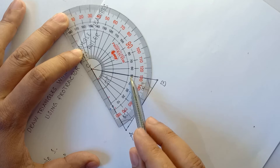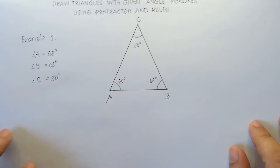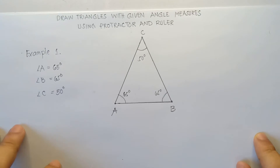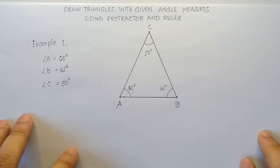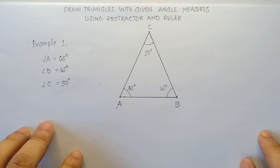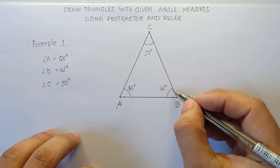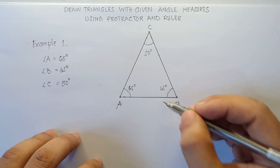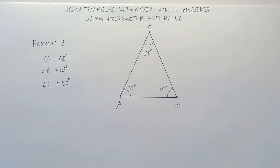All set! That's how you draw triangles with given angle measures. Easy, right? Do not forget to label 65, 65, and 50.